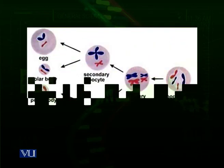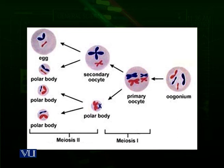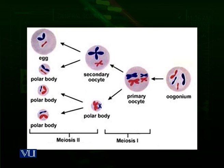Looking at the diagram: oogonium produces a primary oocyte by mitosis, giving a 2N number of chromosomes. Meiosis I then divides it into two haploid cells, but one is larger — the secondary oocyte — and one is very small — the polar body. The secondary oocyte has a large quantity of cytoplasm and half the chromosomes, while the polar body has half the chromosomes but very little cytoplasm.